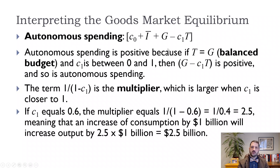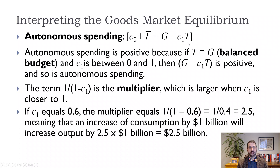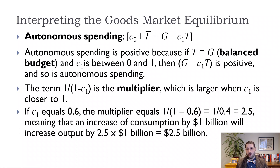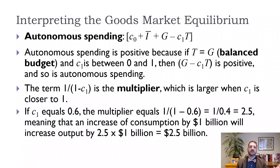The first piece we call autonomous spending. It's positive because the minus C1T term is going to be less than G, I is positive, and C0 is positive. Then we have 1 over (1 minus C1), which is the multiplier. Remember C1 itself has to be less than 1 — you can't spend more than your disposable income — so (1 minus C1) is less than 1, and 1 divided by (1 minus C1) is greater than 1.